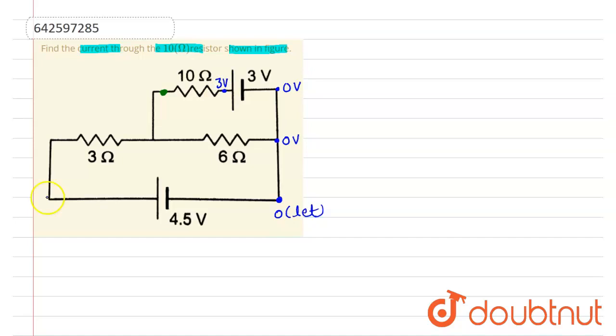The potential over here will be 4.5 volt. Consider the potential at this node is x volt. Assume x is of higher potential.